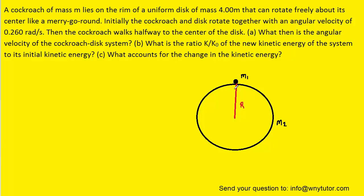We can set up the expression for the initial angular momentum of the system. To do that, we simply need to recall that angular momentum is equal to an object's rotational inertia multiplied by its angular velocity.